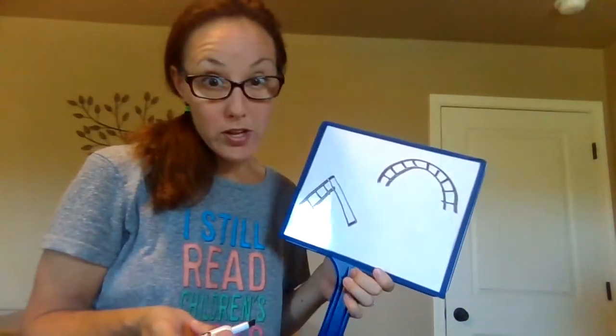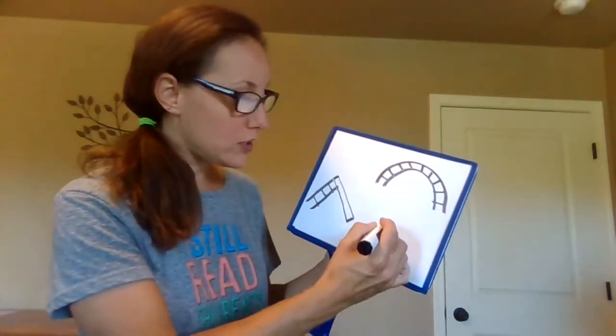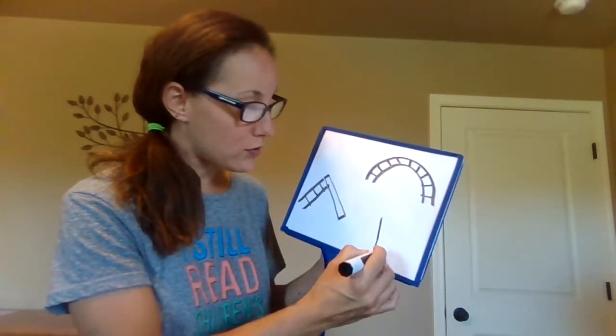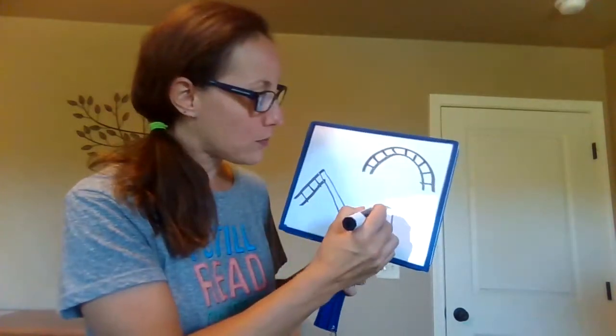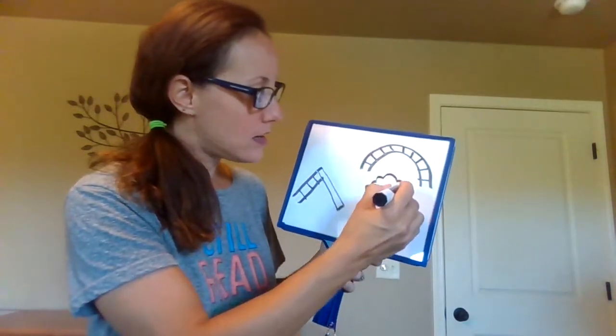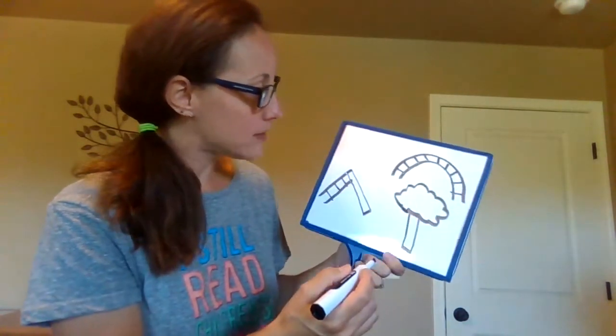At this park there were a lot of trees. It was a very nice playground so I'm gonna use a rectangle shape for the trunk and then kind of a circle shape for my branches. I like to make it kind of bumpy, maybe like a cloud shape. That's a good one.